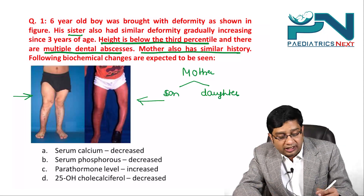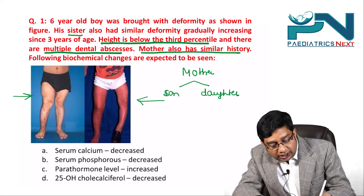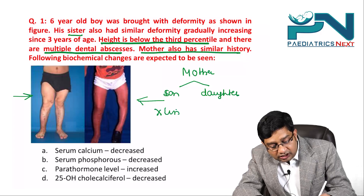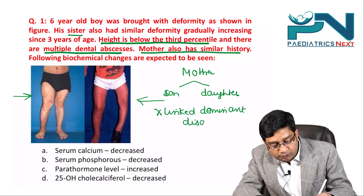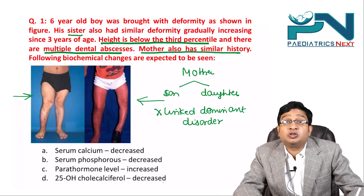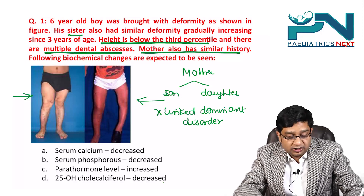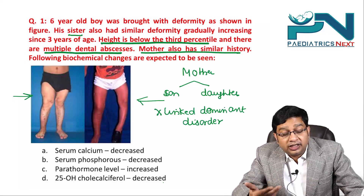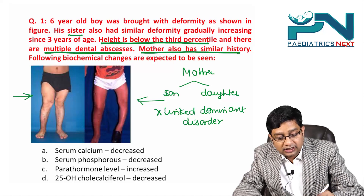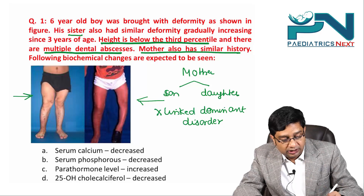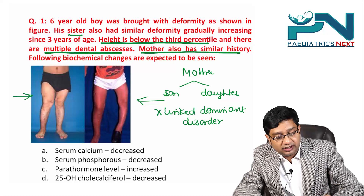Taking clues from the question: the mother has the disease and is transmitting the X chromosome to both the son and the daughter. Both son and daughter are affected, so it is most likely an X-linked dominant disorder — specifically X-linked hypophosphatemic rickets.